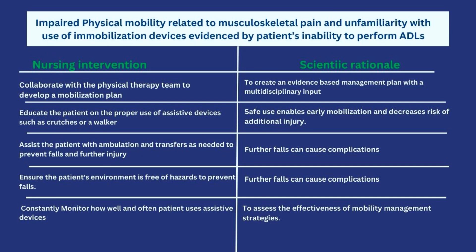The rationale for assisting with ambulation is that falling on an already fractured limb could cause serious complications. Additionally, ensure the patient's environment is free of hazards to prevent falls — remove water from the floor, clear obstacles, and ensure the patient wears appropriate footwear on the unaffected leg. Finally, consistently monitor how well and how often the patient uses their assistive devices, as some patients may leave them unused. Monitoring ensures they are following the management plan and allows assessment of the mobility strategies' effectiveness.